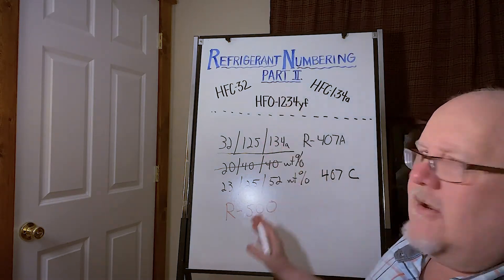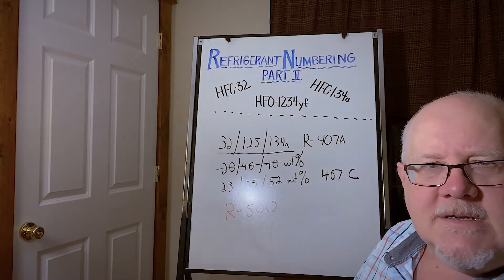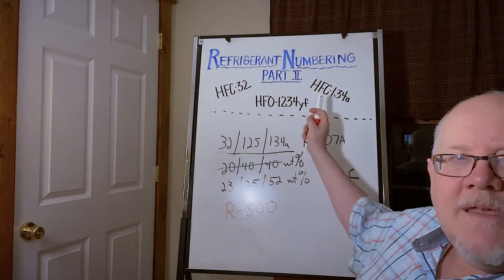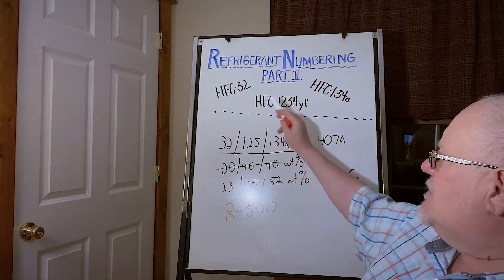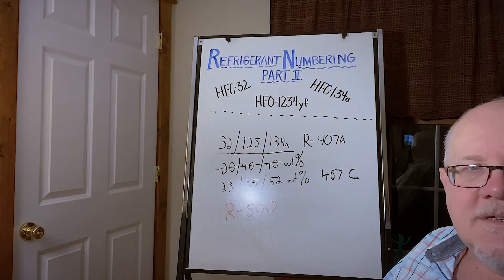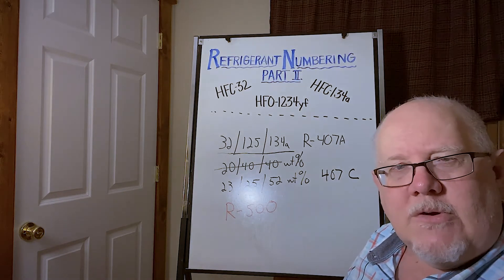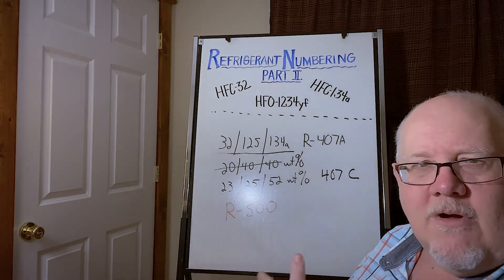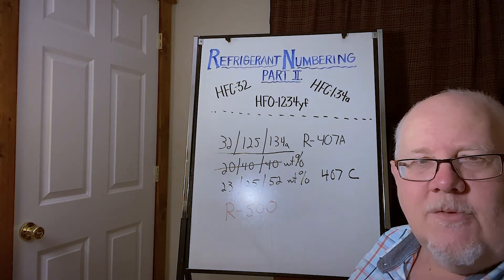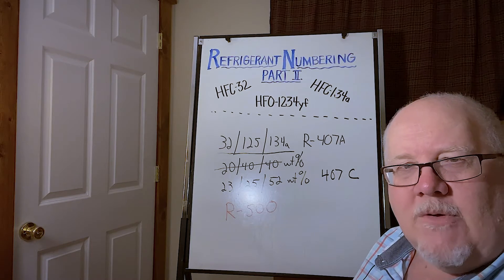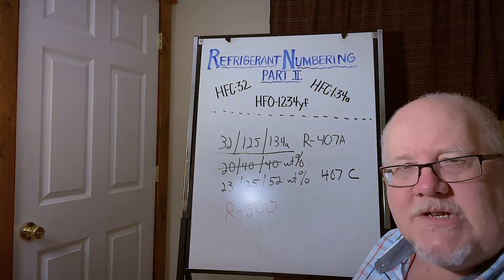And there's a lot of other properties that come into play when you start talking about the performance of these. But I just wanted to be clear on the naming and numbering system. Part one video covers how we get to the basic molecules. And then once we start building formulas, we start adding sequentially to the series of numbers. If it's a brand new combination of new constituents, it gets a new 400 series number. Unless it's an azeotrope, it'll get a 500 series number.